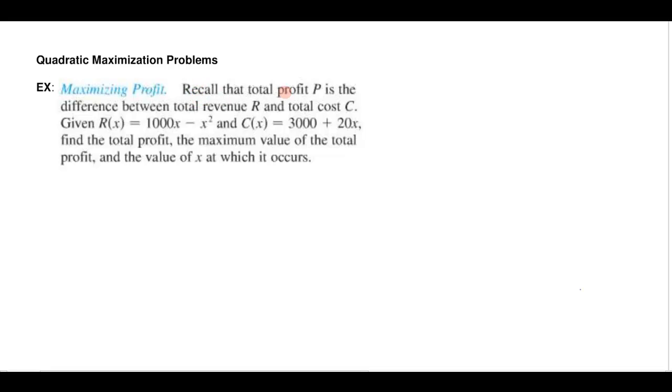Recall that total profit P is the difference between total revenue R and total cost C. So if you have so much money coming in and then you subtract off whatever your costs are, then that's going to give you the profit. That's how much you'd earn there.